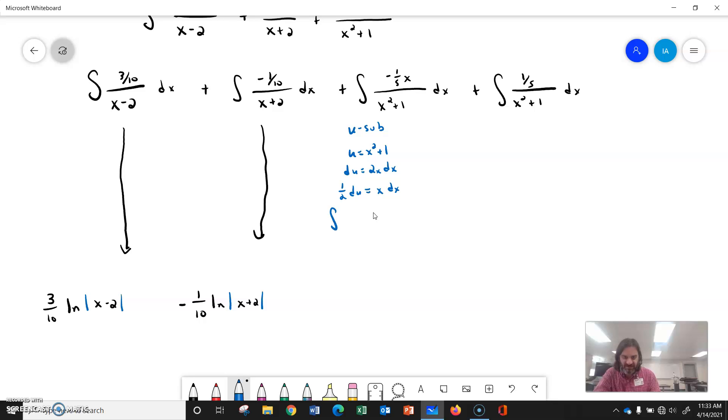So when we set that up, we'll have the integral of negative 1 fifth, which is not getting replaced, times 1 half, times 1 over u du. So let's make sure that's right. We'll replace the x squared plus 1 with u. The negative 1 fifth didn't go anywhere. The x dx becomes 1 half du.